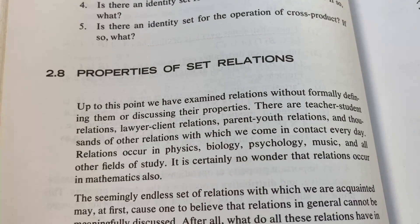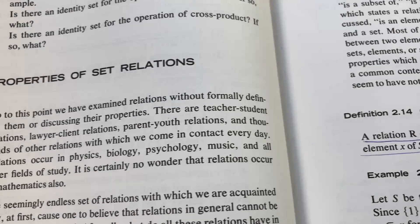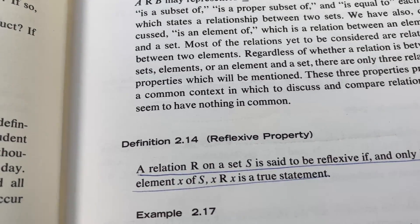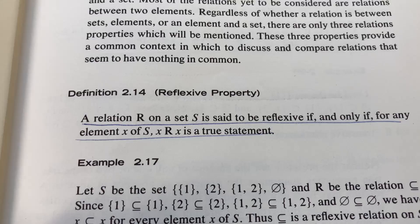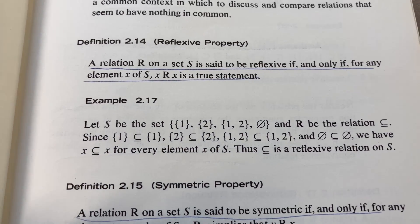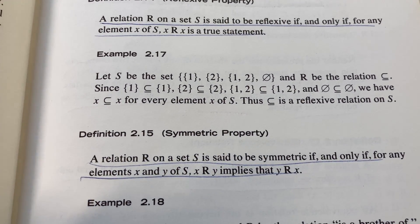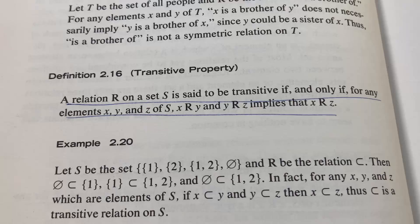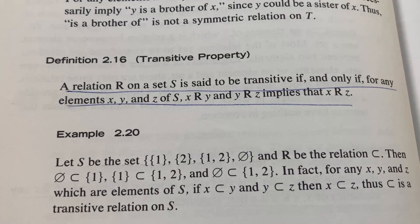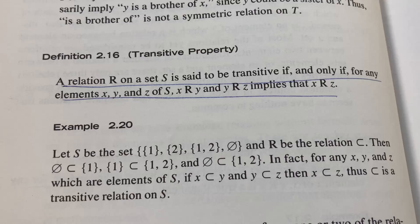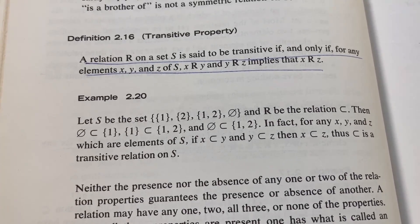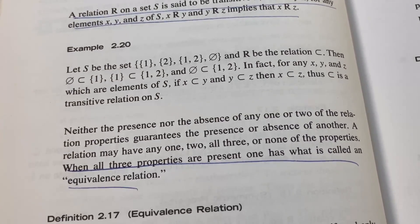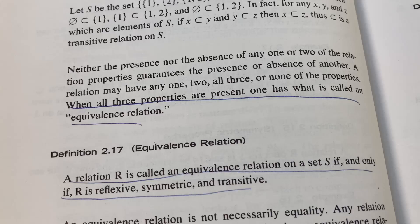2.8 is on properties of set relations. So here, it defines what it means for a relation to be reflexive and then it gives an example. And then it defines what it means for a relation to be symmetric and it gives an example. Then it does the same thing with the transitive property. It defines what it means for a relation to be transitive and it gives you an example.